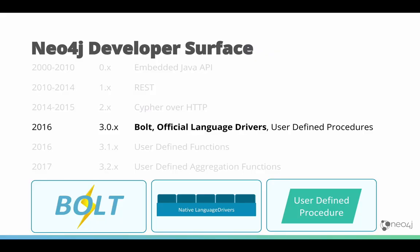Neo4j has developed over the years from an embedded Java API over a REST server to the introduction of Cypher, that originally was served over HTTP, to until 2016 a binary protocol called Bolt with official language drivers. Due to the change to the binary protocol we couldn't use the REST APIs for management functionality anymore, so user-defined procedures were added to Neo4j as a new capability.